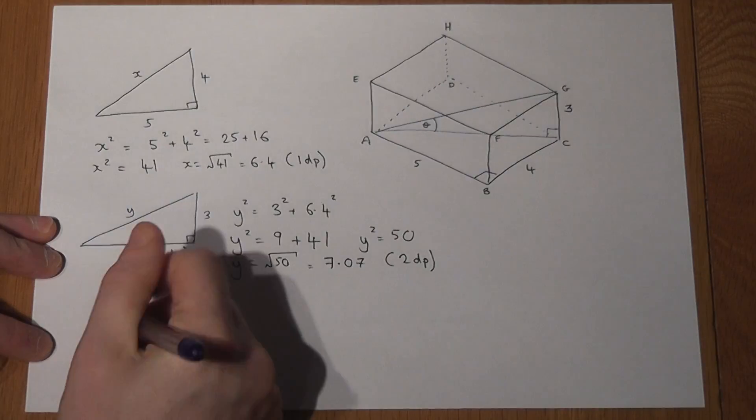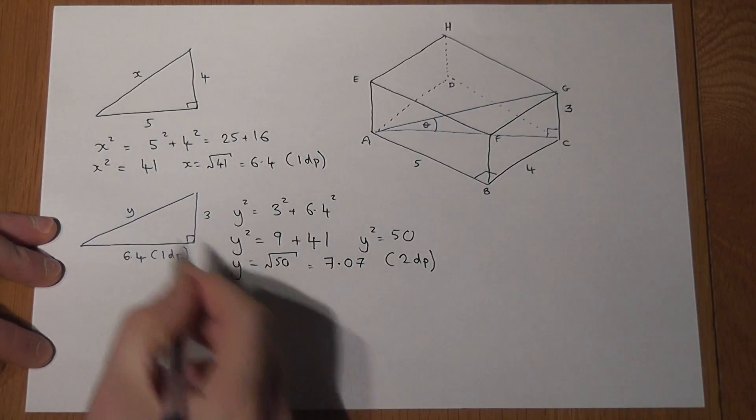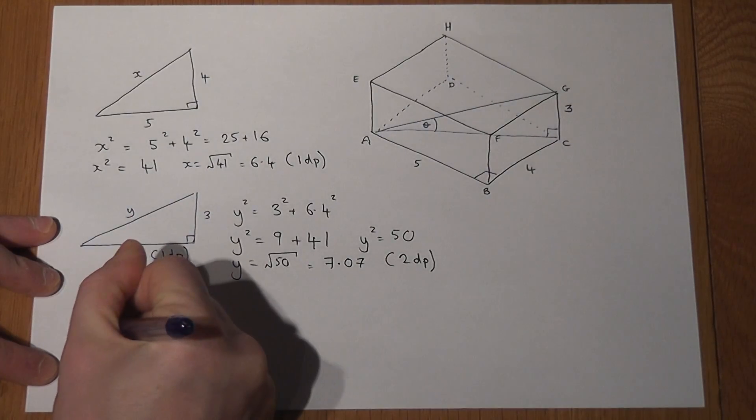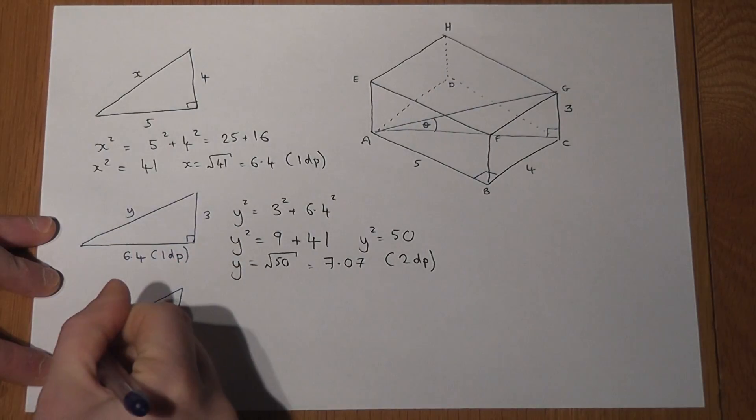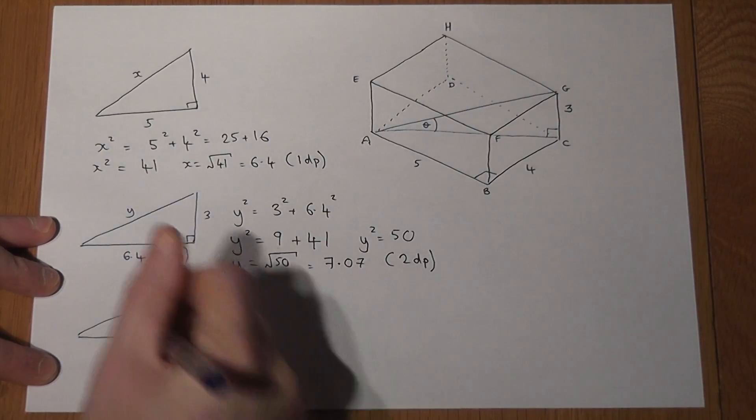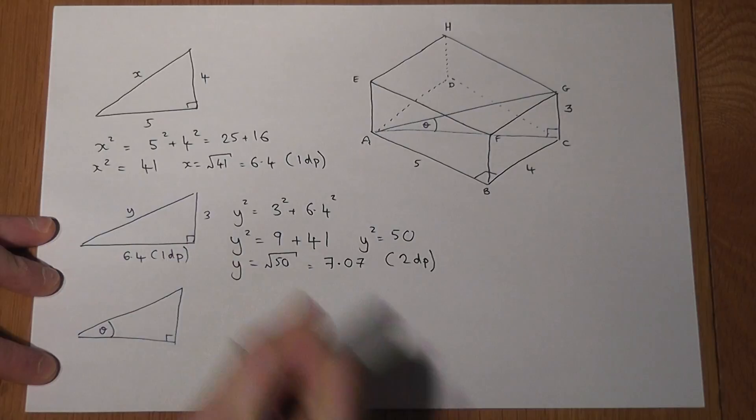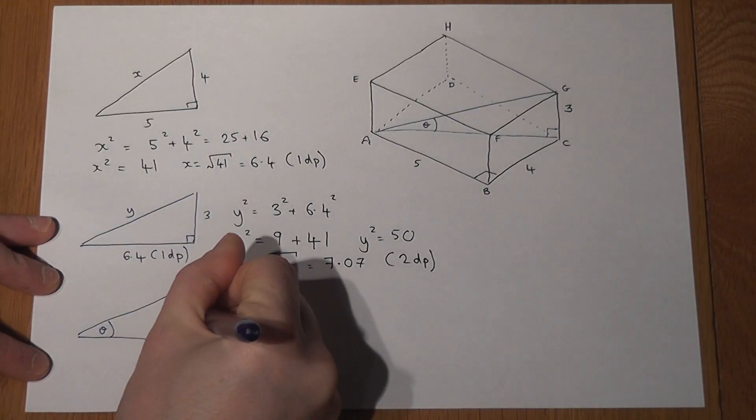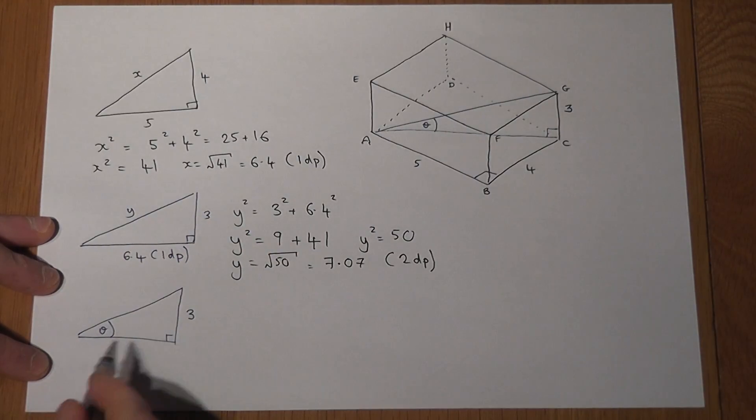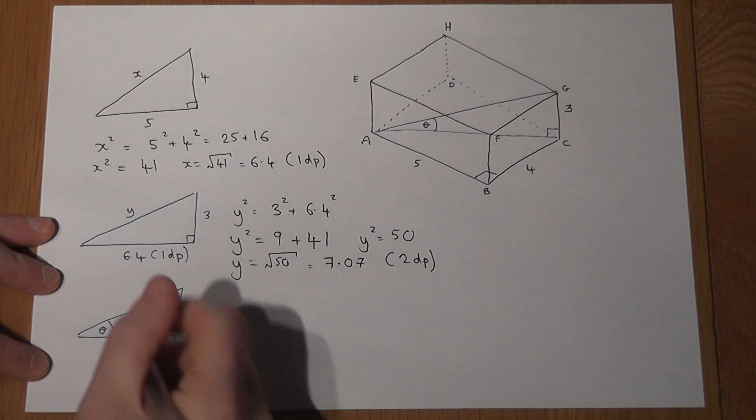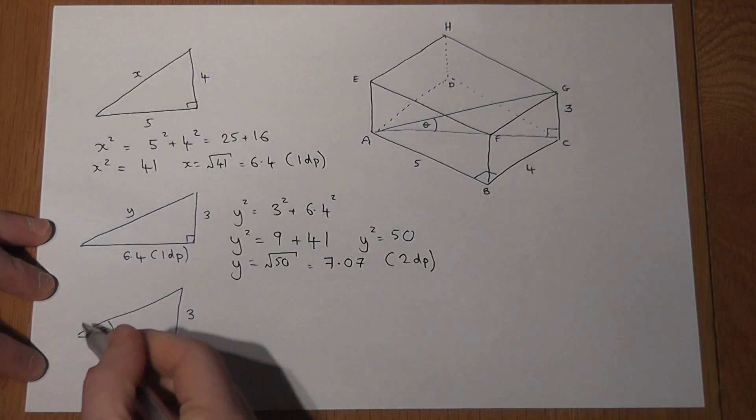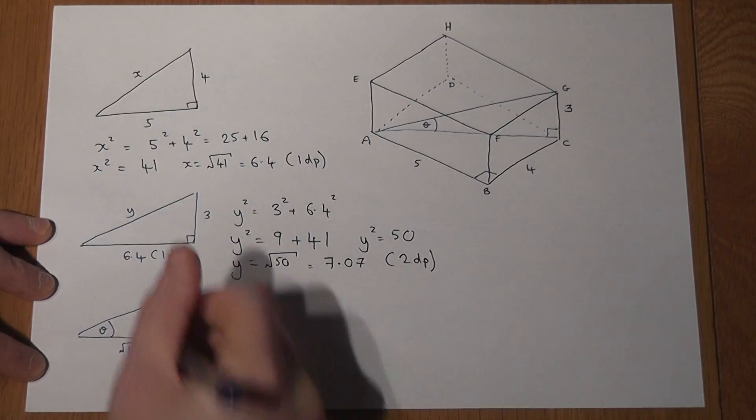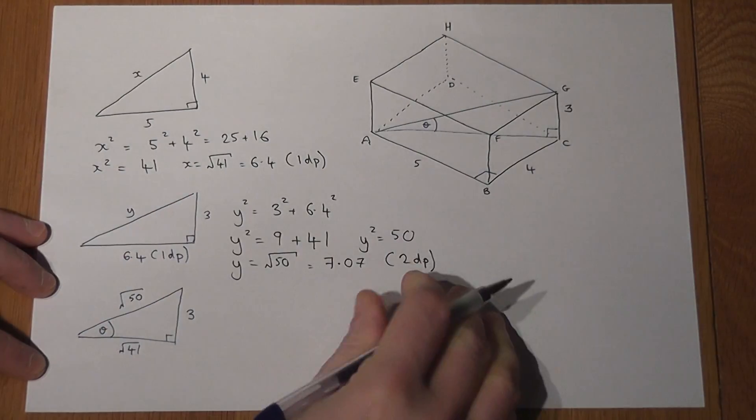Now if I sketch out the triangle again, it is just the one above. Then here's theta. I know this is 3. I know the length here was 6.4 or root of 41. I also know Y, which is 7.07 or root of 50.